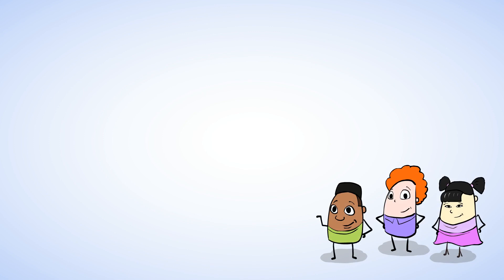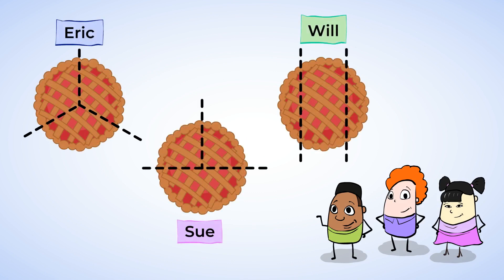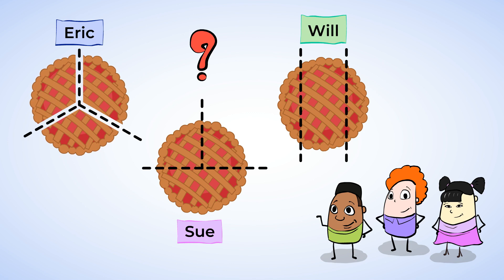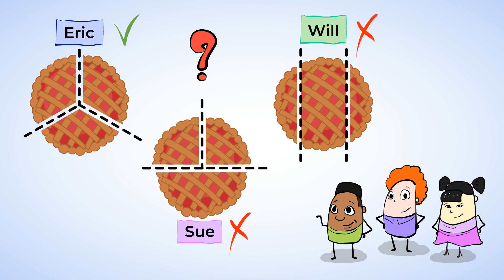Will just came in. Now Eric, Sue, and Will are going to split one of those famous apple pies. Each friend has a different idea about how to cut the pie into thirds. Which one of these ideas shows three equal shares? In Eric's case, it looks like all three pieces are the same size, but I can't say the same for Sue's or Will's. Sue has a big piece at the bottom, and Will has a big piece in the middle. So they didn't cut theirs into thirds. Only Eric's version cuts the pie into thirds.